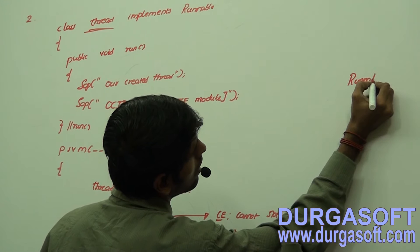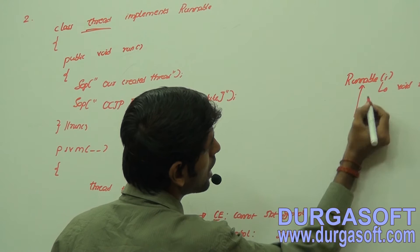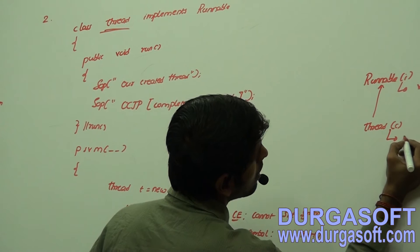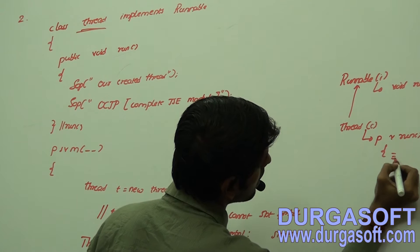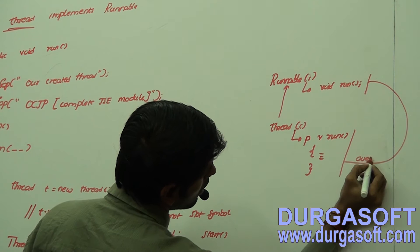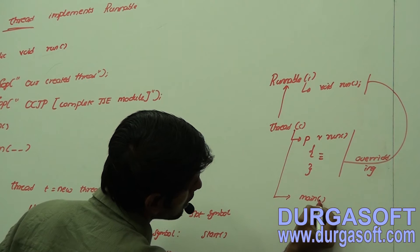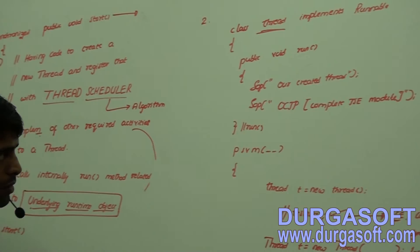See the structure here - Runnable interface, which has one method - by default all methods in an interface are public and abstract. The child class is our Thread class, which has the run method implemented as public void run with some implementation. These two methods are going to behave as overriding, which we will learn in detail. It also has one main method which is static with return type void and access modifier public.